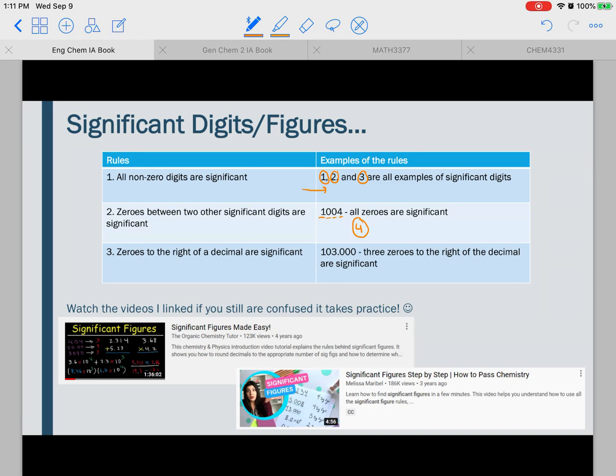The third rule is that zeros to the right of the decimal are significant. So in the example here, I have 103.000. So three zeros to the right of the decimal are significant, and because there are zeros to the right, it also means that these three here are going to be considered significant. So that means we're going to have six total sig figs.